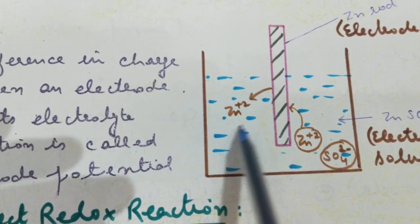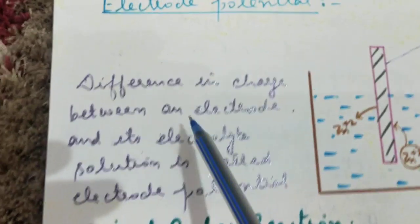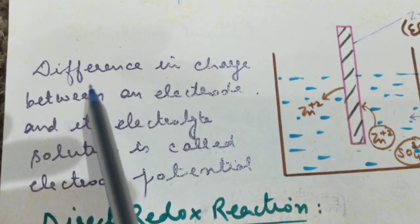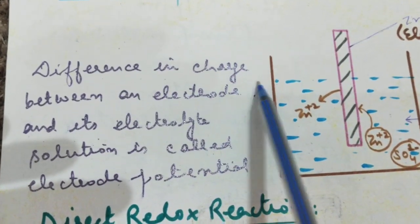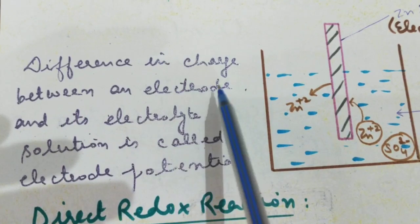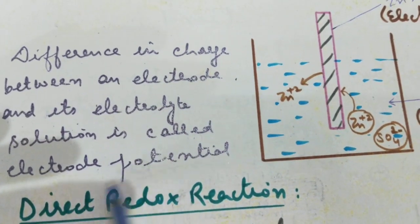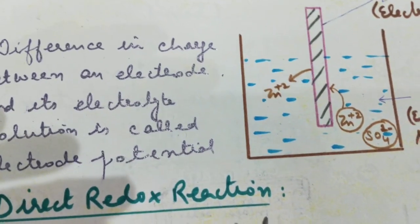Potential difference in the charge is called electrode potential. So, what is electrode potential? Difference in charge between an electrode and its electrolyte solution is called electrode potential.